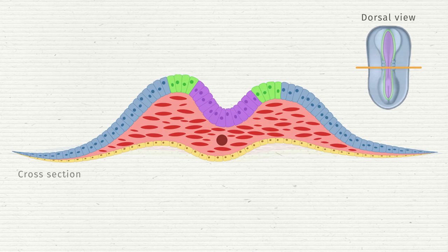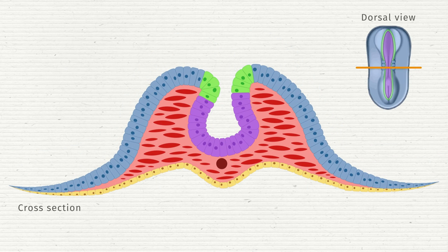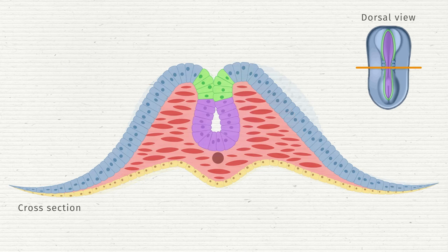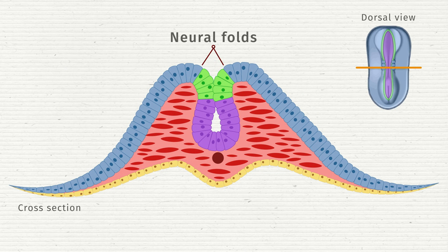During neurulation, as the neural plate begins to close to form the neural tube, the presumptive neural crest cells occupy the dorsal tip of the neural plate, the neural folds, and are laterally flanked by the prospective placodal ectoderm in the cranial regions and by the prospective epidermis in the trunk and tail.